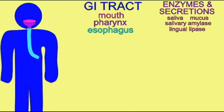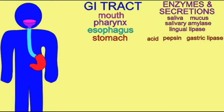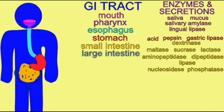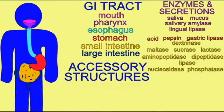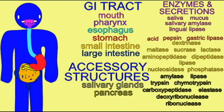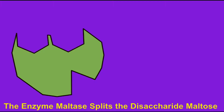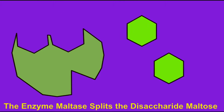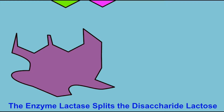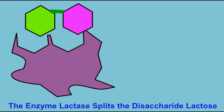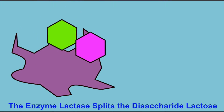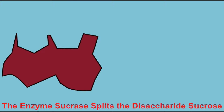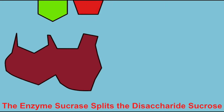Because the active site of the enzyme fits the substrate perfectly, each enzyme typically only catalyzes one reaction. In these examples, the enzyme which breaks up maltose, known as maltase, cannot break up lactose — that enzyme is called lactase. And lactase cannot break up sucrose; the enzyme which performs this reaction is called sucrase.